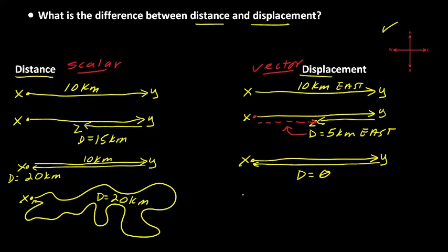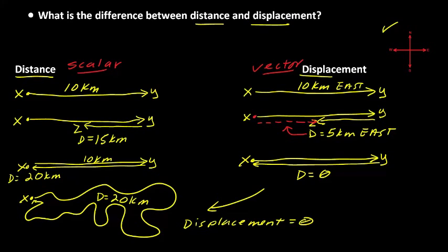Let's look at the curved-path example. We traveled a total distance of 20 kilometers, but since we came all the way back to the original starting point, the displacement is equal to zero. Why? Because displacement is the straight-line distance and direction between the starting point and the ending point. Another way to say this: displacement is how far and in what direction you are displaced from the origin.